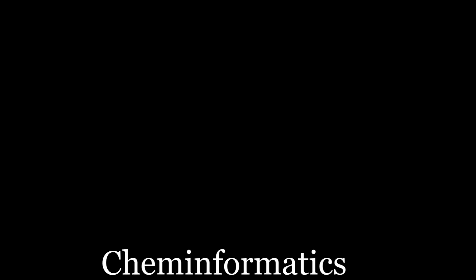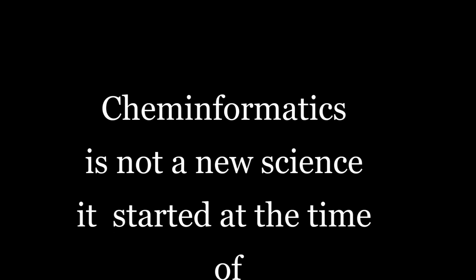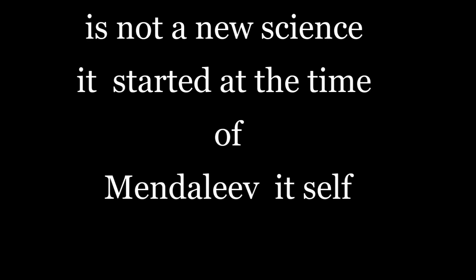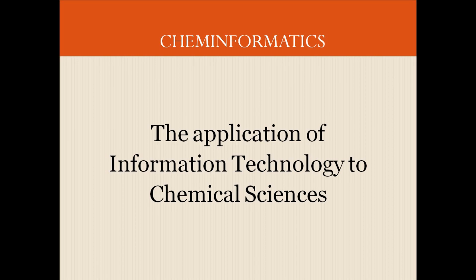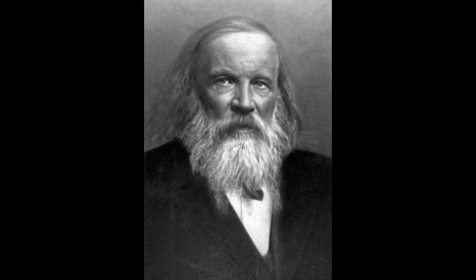If we agree that Cheminformatics is an interdisciplinary subject which connects Chemical Science with Information Technology, then Cheminformatics is not a new science. It started from the period of Mendeleev himself. Mendeleev developed columns and groups in order to make decisions about elements, classifying them into metals, non-metals, and metalloids by considering certain properties. So, Cheminformatics was started by Mendeleev himself.